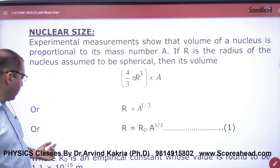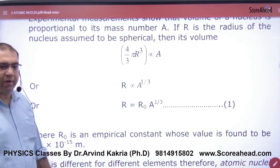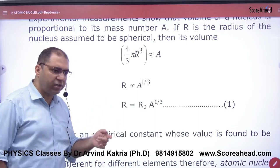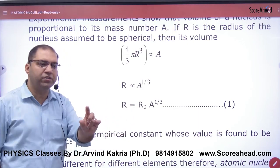And the constant is R₀, which has value 1.1 × 10⁻¹⁵. So let's mark this formula. If this work comes, calculate the radius of the nucleus.